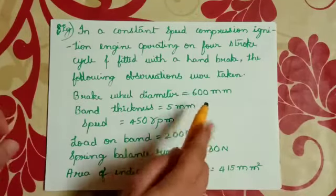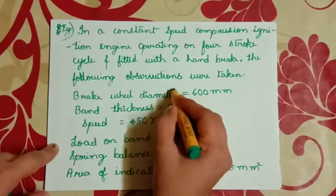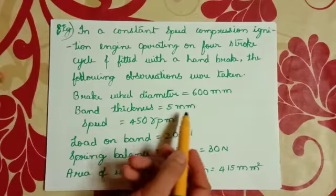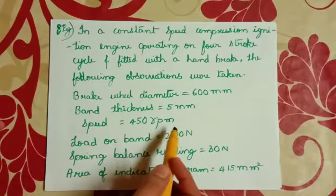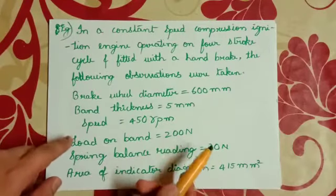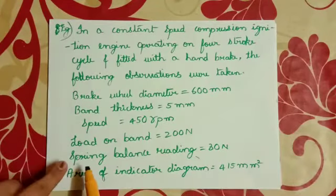Brake wheel diameter 600 mm, band thickness 5 mm, speed 450 rpm, load on band 200 newton, spring balance reading 30 newton.